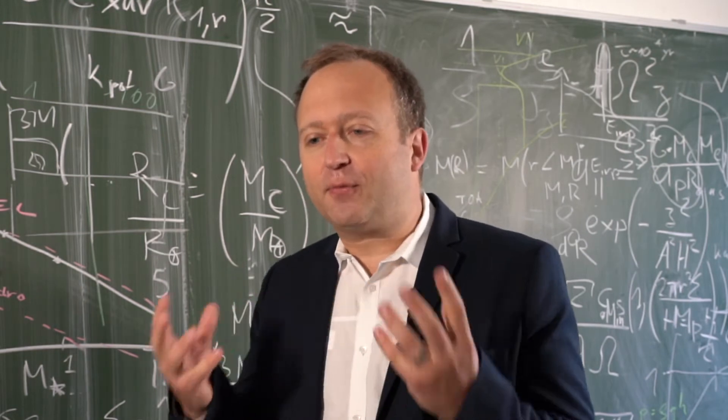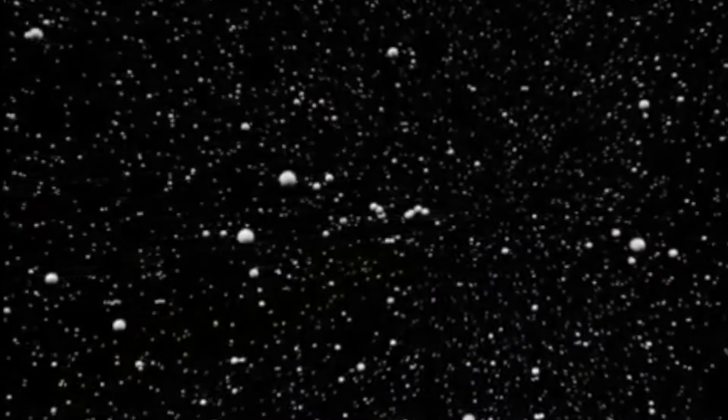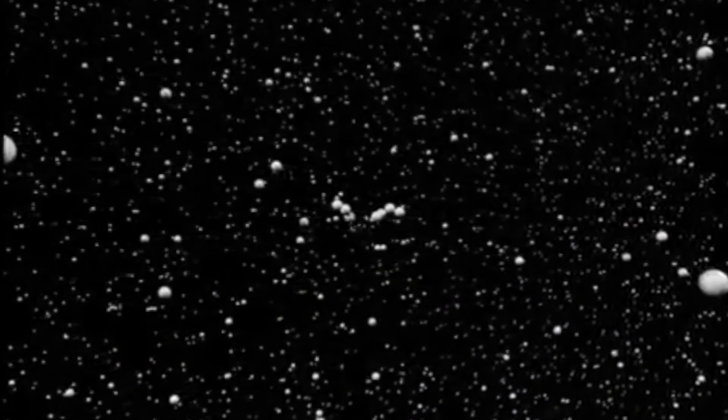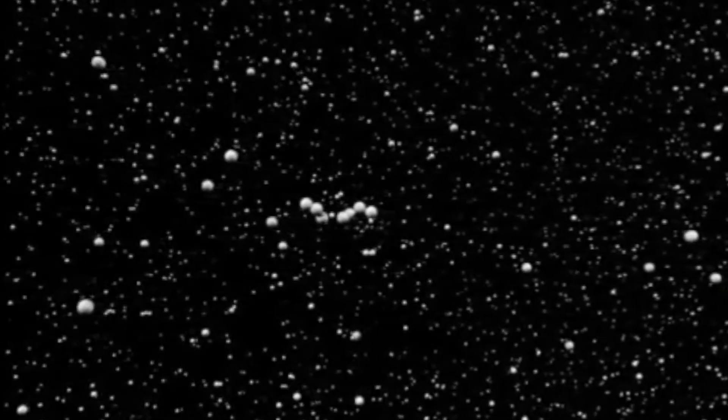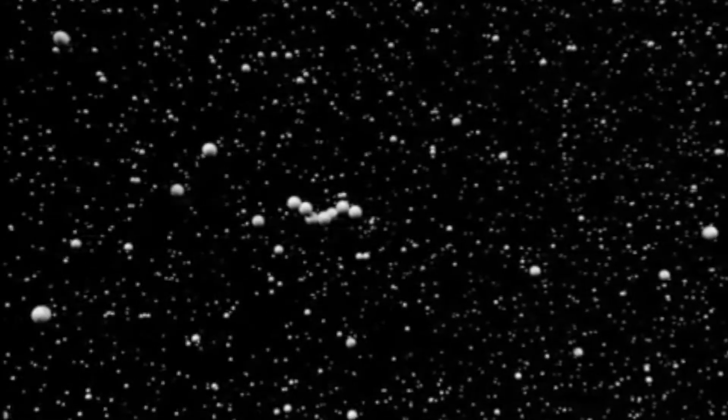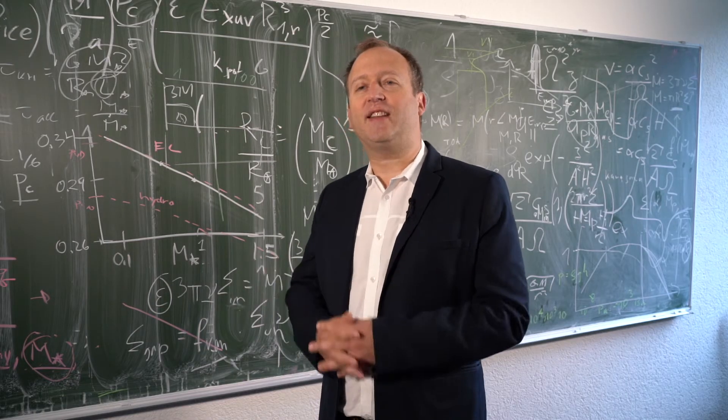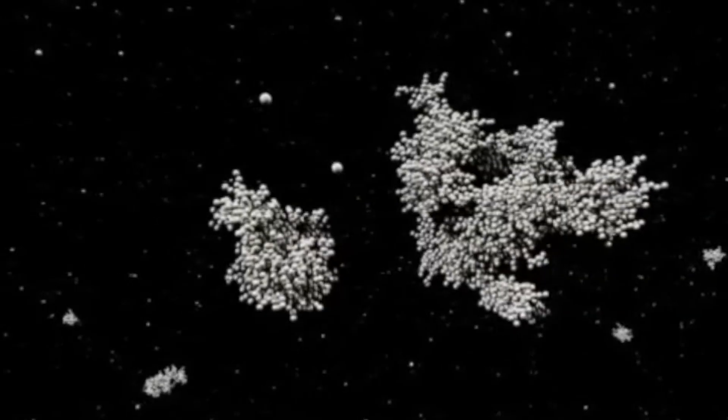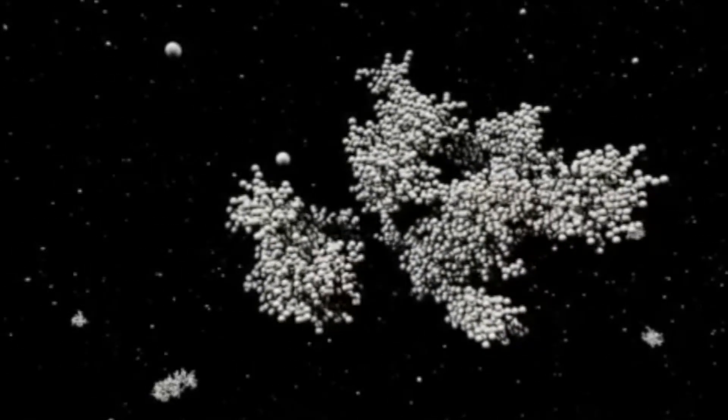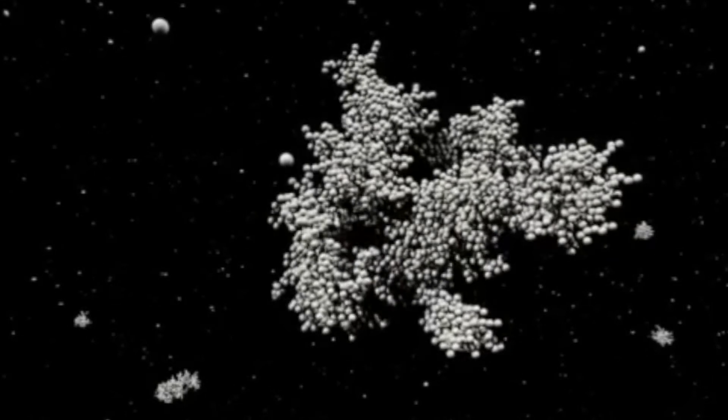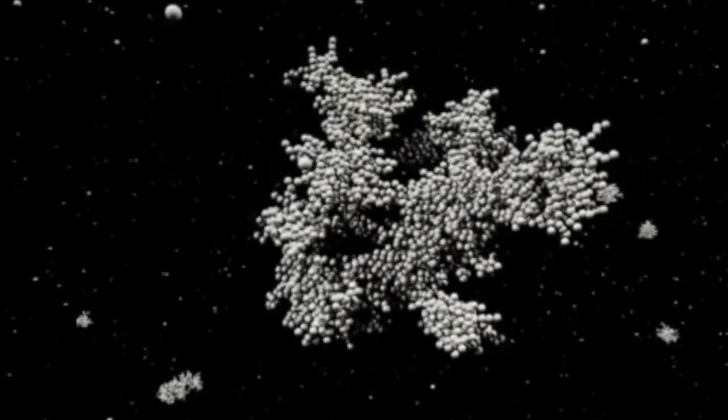Now we have these tiny micrometer size grains and what they now do is start to collide with each other. At the beginning very gently, meaning that they can stick together via intermolecular forces, via electrostatic forces, meaning that over time from these very tiny grains they become larger and larger, forming fractal structures.